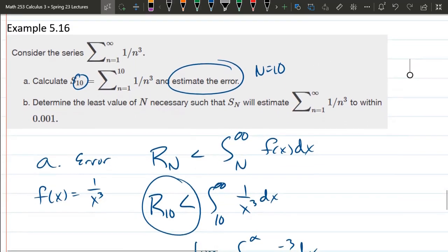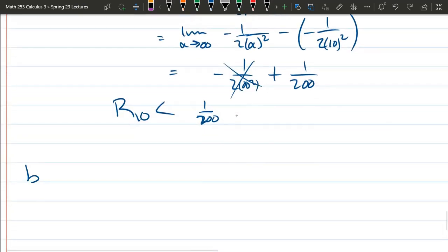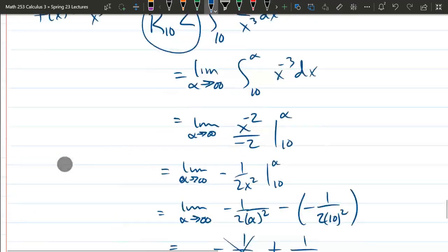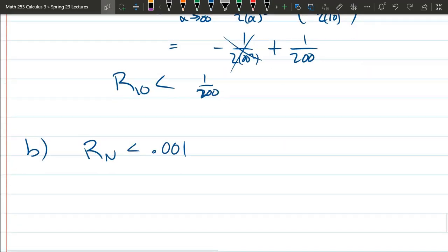Now part b, similar but different. Part b, we don't know what n value we need to get this error within 0.001. So part b, they tell us rn needs to be less than 0.001.